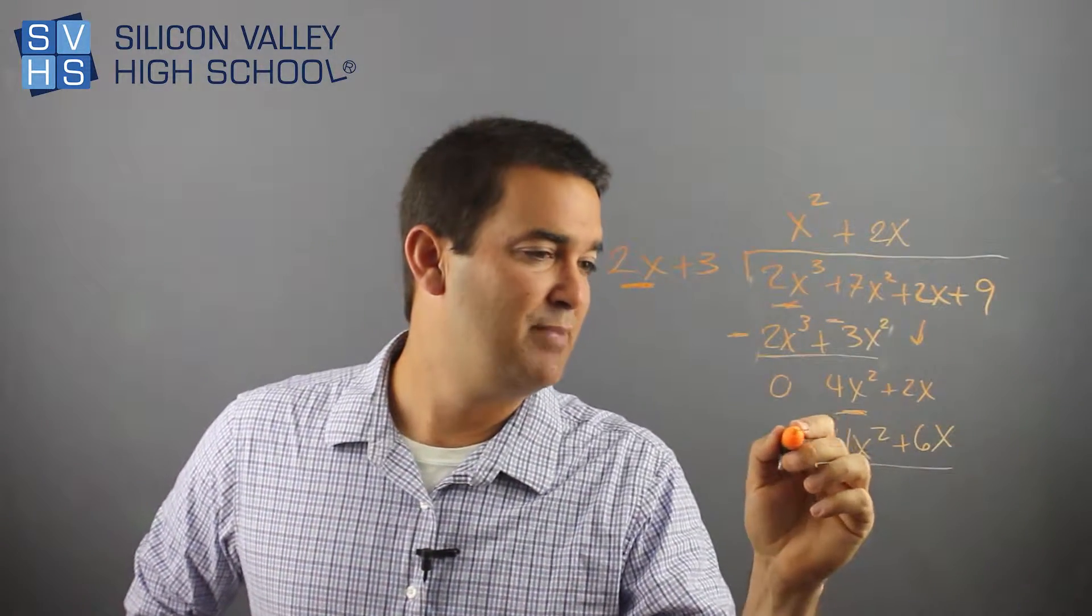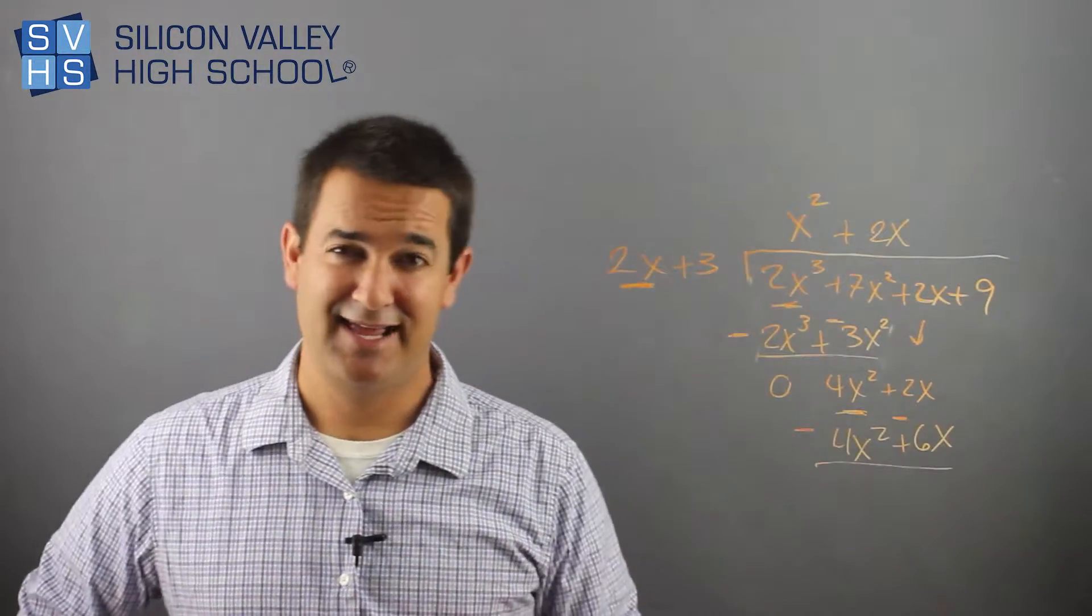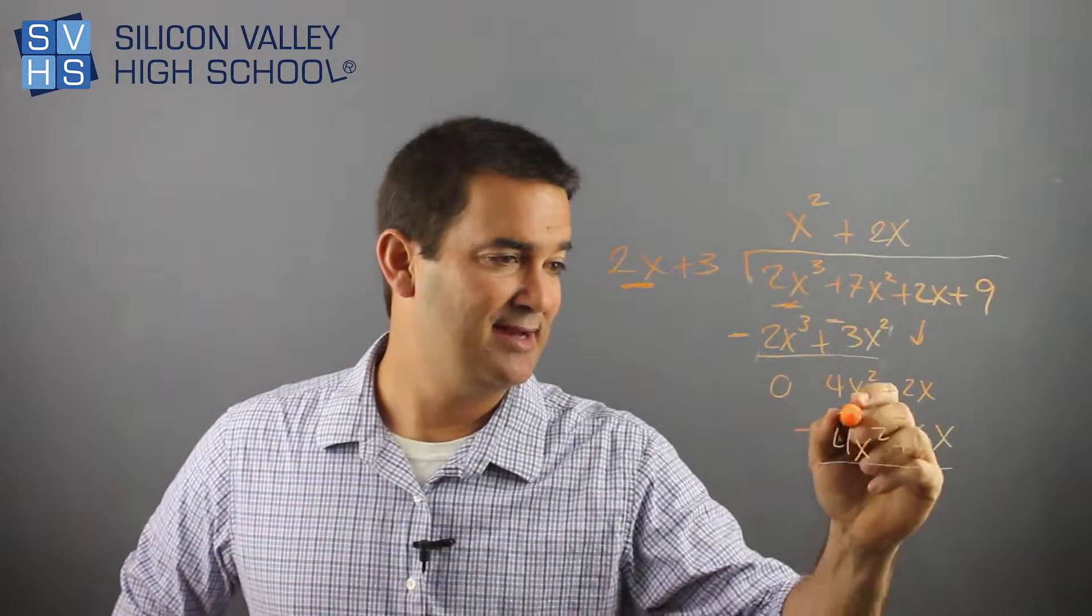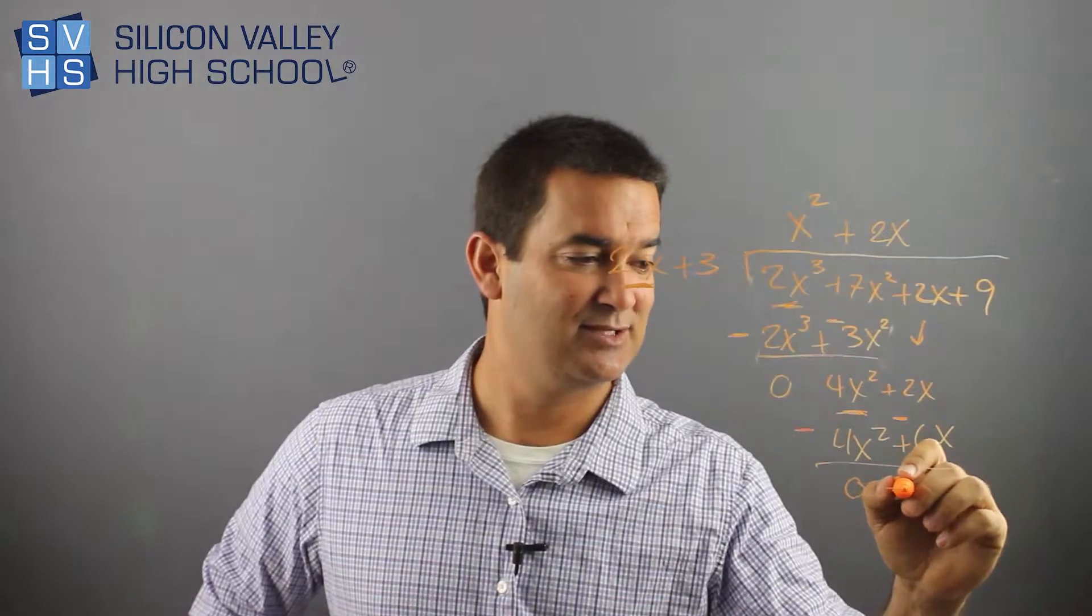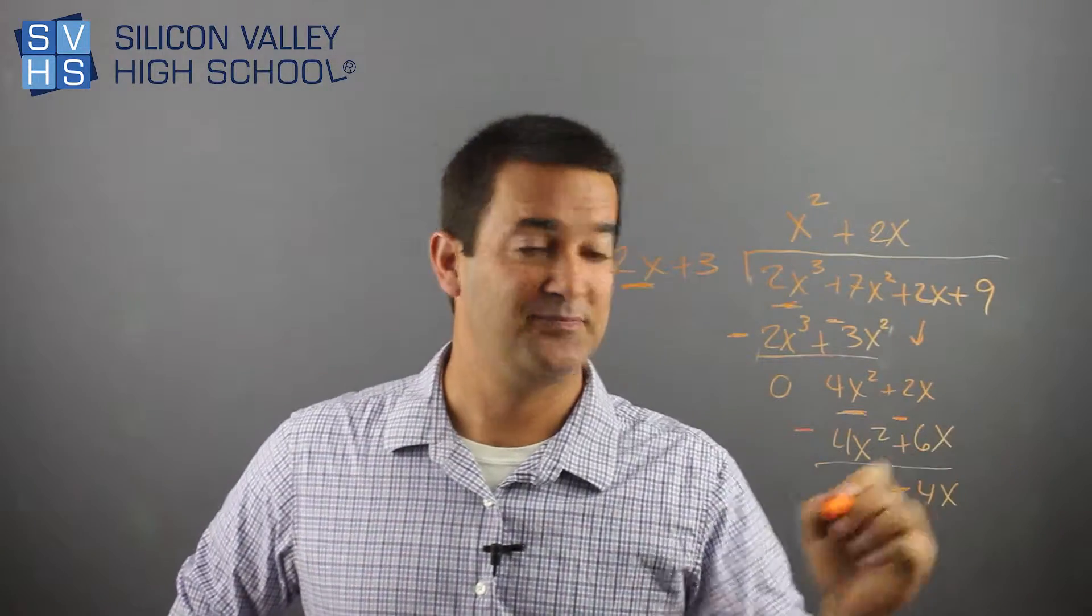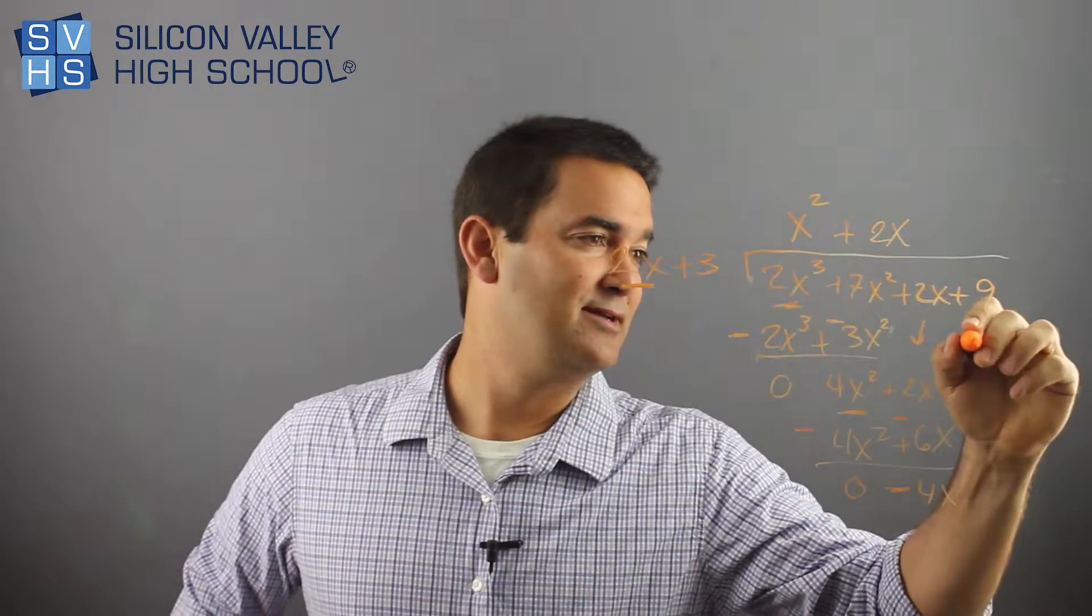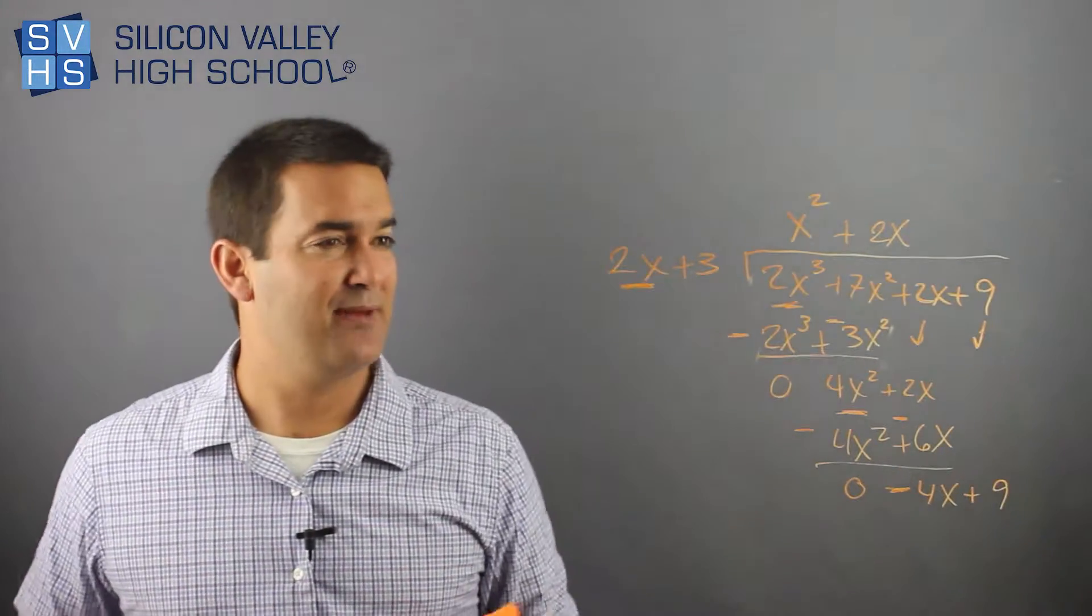Remember the step that Ryan warned me about. Don't mess this up. Change both signs at that stage. Now, you add down, gone magically. Now, this is 2x minus 6x, which is a negative 4x. Now, this dude carries down here, the 9 plus 9. Now, same thing.